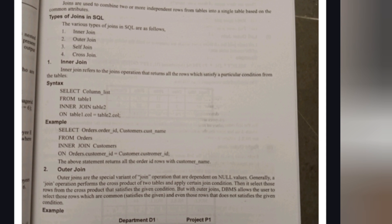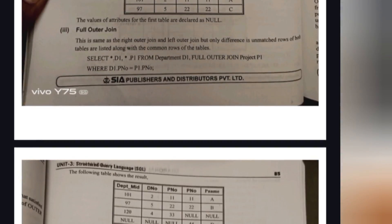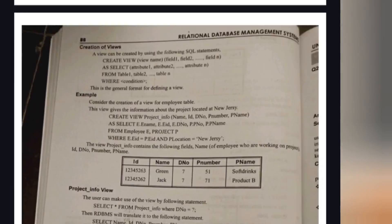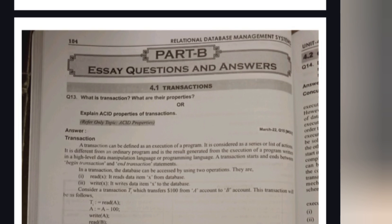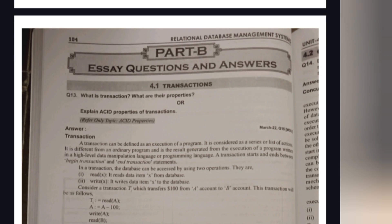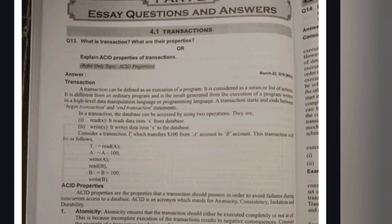Just remember the syntaxes for DDL commands — no need to learn lengthy explanations. Another important concept in Unit 3 is Joins. The types of joins are: Inner Join, Outer Join, Self Join, and Cross Join. You need to draw the diagrams for joins. You can also learn the Views concept along with Joins.